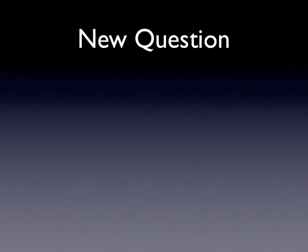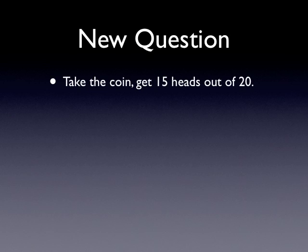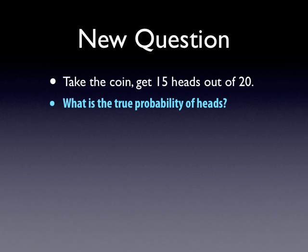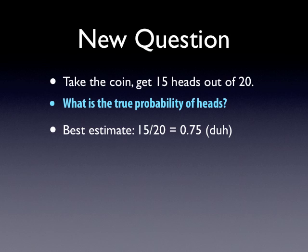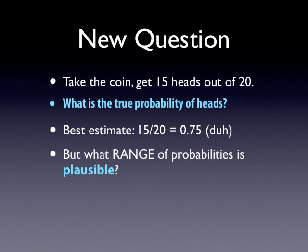Now on to estimation. Estimation involves a new question, and here's the setup for the parallel estimation question. You take the same coin, you get 15 heads out of 20, and our question is: what is the true probability of heads? See how that's different from what we were doing before? The 'is it fair' question is different. We want to know what is the true probability. Our best estimate clearly is 15 out of 20, which is 0.75. But remember, we don't want just a single number — what's the range of probabilities that are plausible?